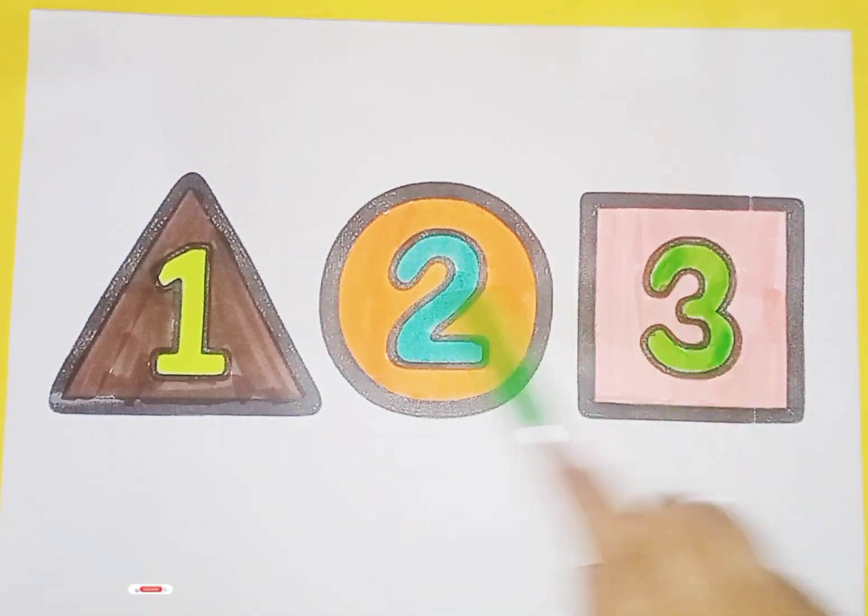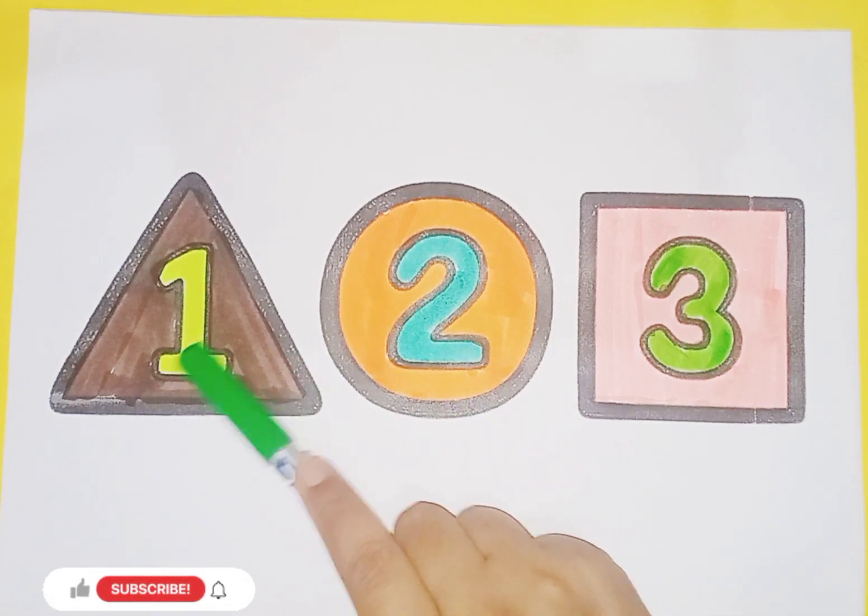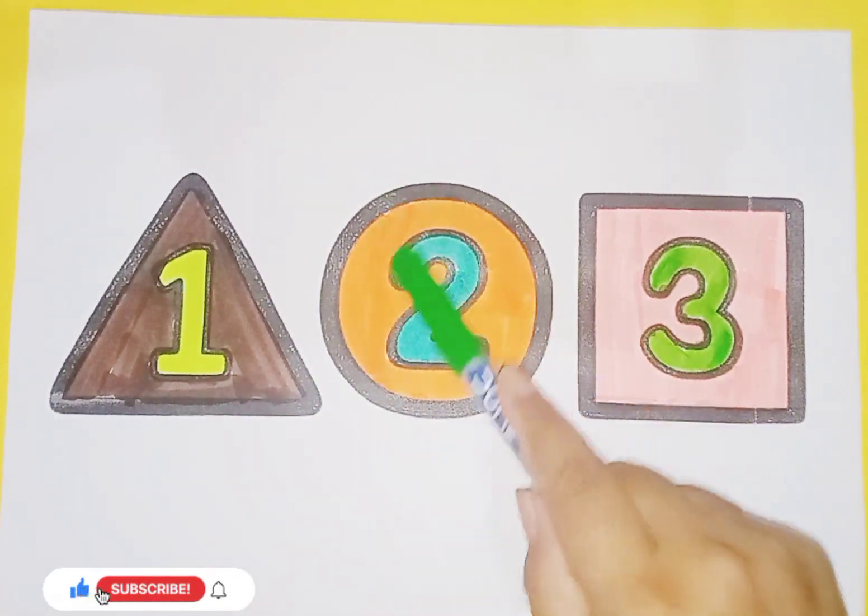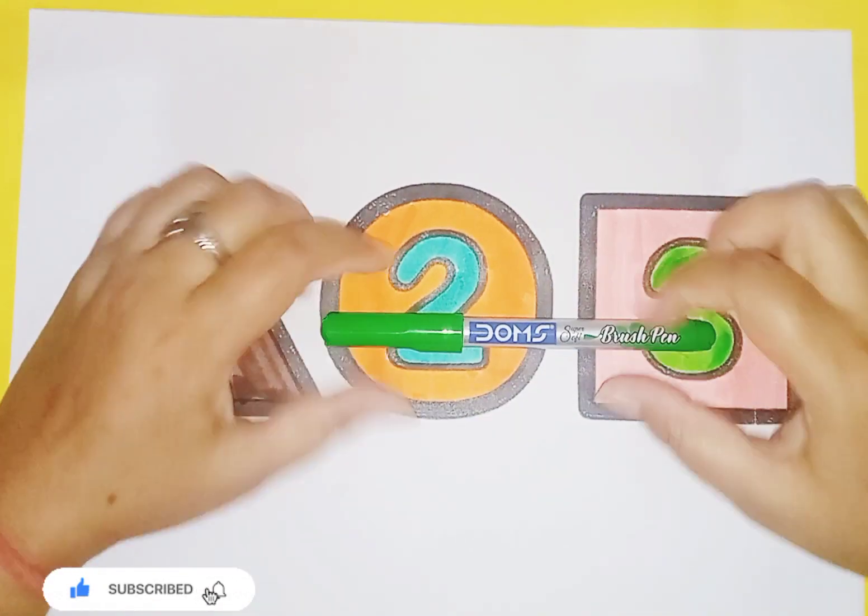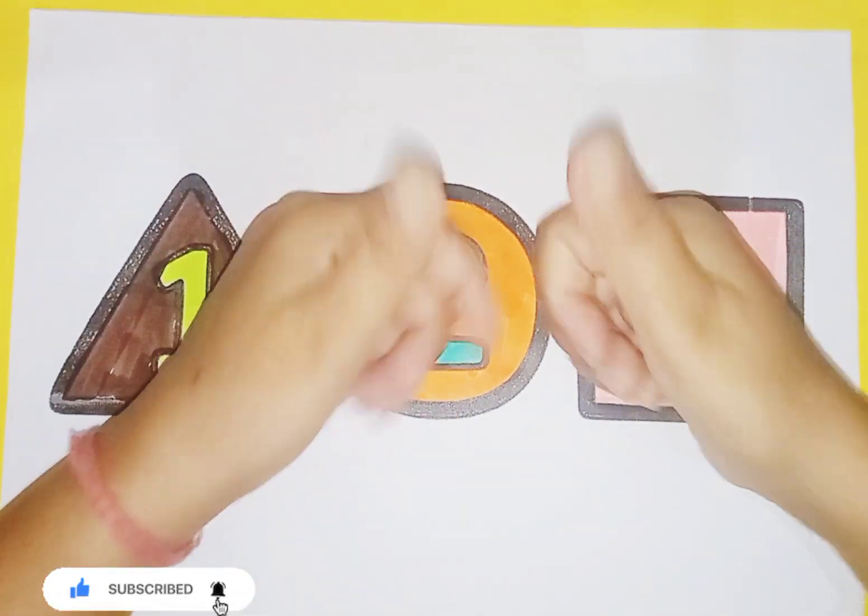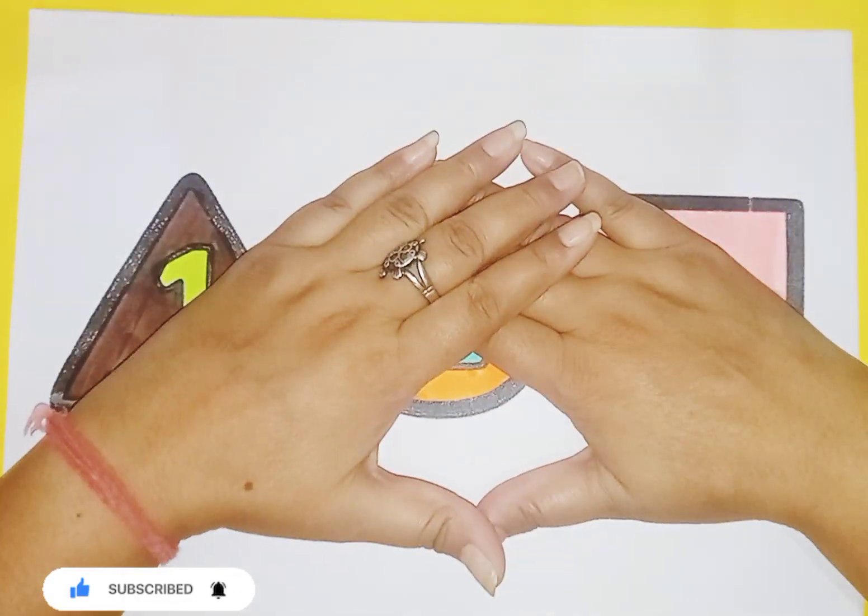So kids, today we learned shapes and numbers. Shape triangle, number one. Circle, number two. Square, number three. I hope you liked the video. If you liked the video, please like and subscribe to my channel. See you next video. Bye bye.